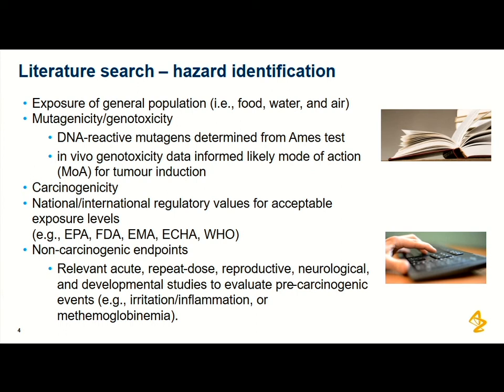It's worthwhile looking for any regulatory published limits from authorities in the US, Europe, and across the world — they publish limits for food and drinking water which can be helpful reference points, either to use directly or as benchmarks. Non-carcinogenic endpoints such as acute studies, repeat dose data, reproductive, neurotoxicity, and developmental studies can also be useful for understanding pre-carcinogenic events like irritation, inflammation, or methemoglobinemia.